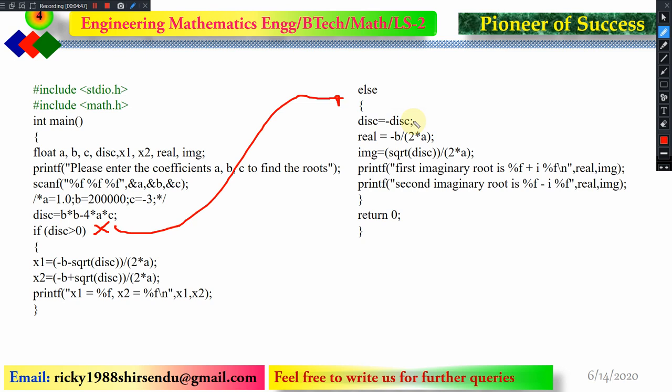Then we are calculating the real part by -b/2a, and we are also calculating the imaginary part by √disc/2a. And thereby we are separately calculating the real part and imaginary part. And then we are printing it this way.